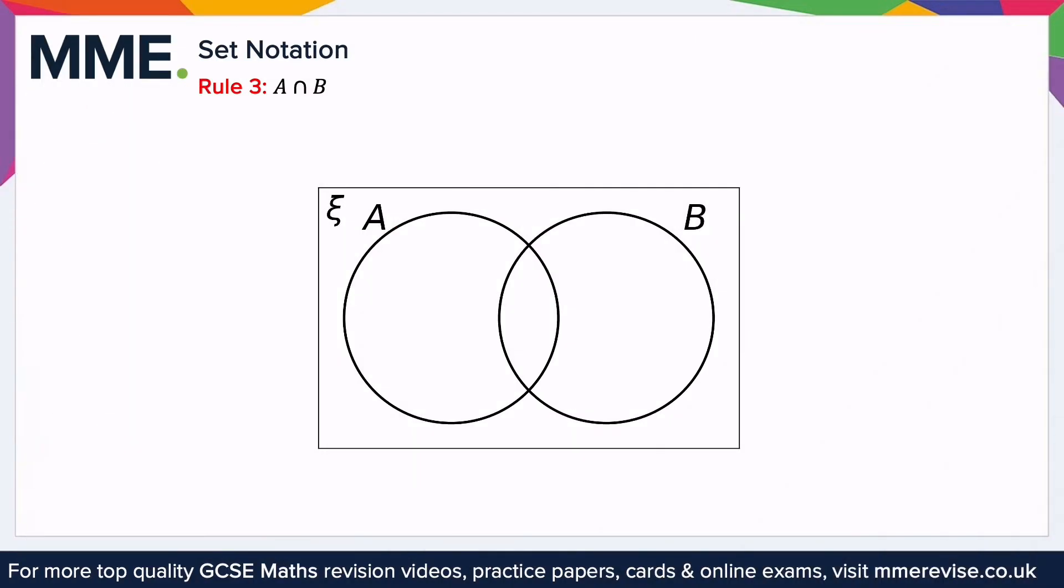This piece of notation means A intersect B. So it contains all the numbers that are in A and in B. So what I mean by that is if A was the set 4, 5, 6, and B was the set 1, 2, 3, 6...